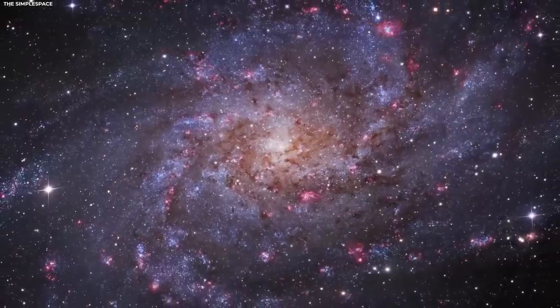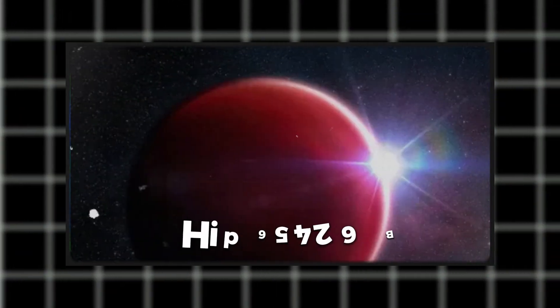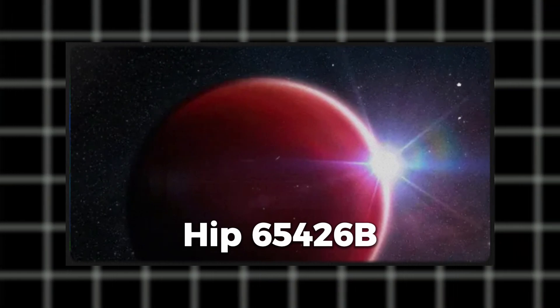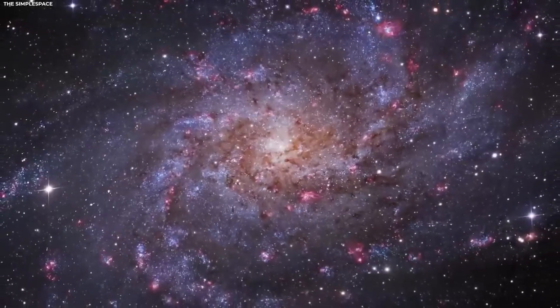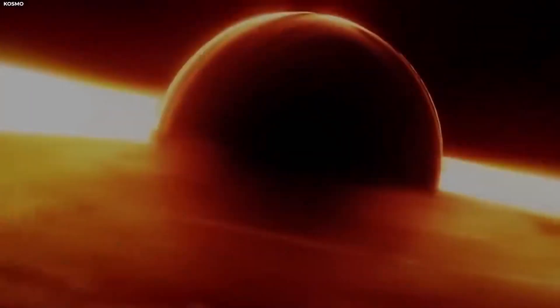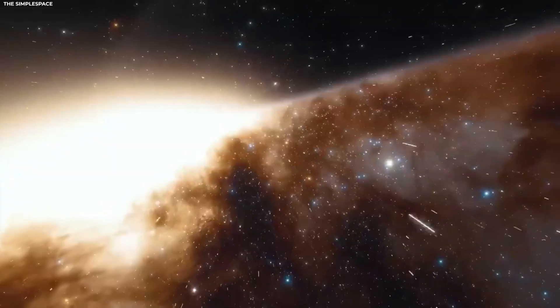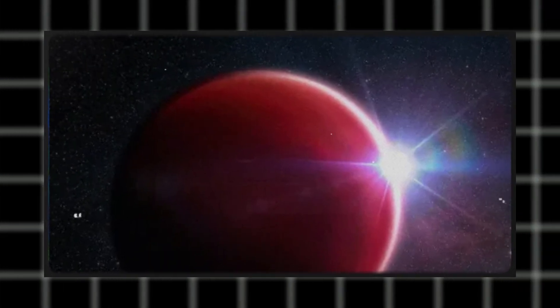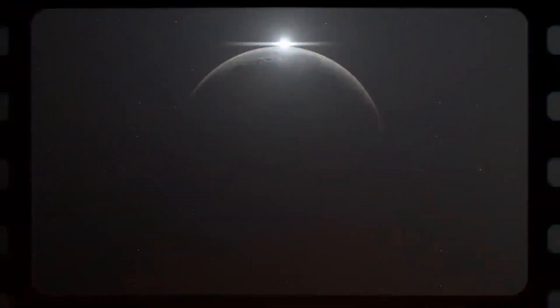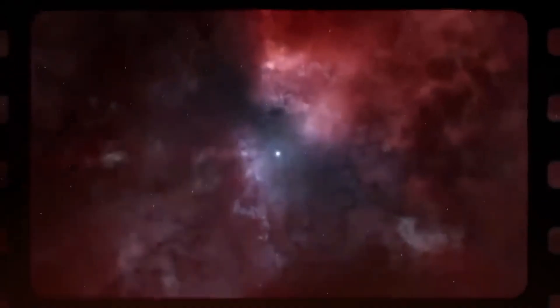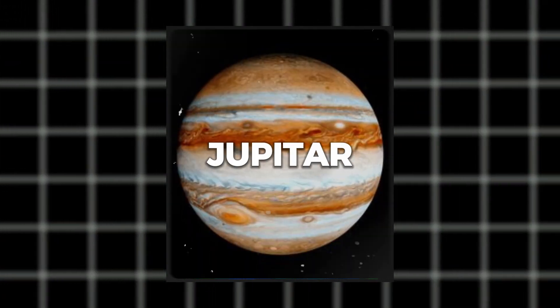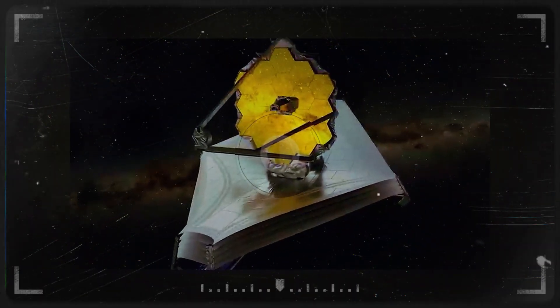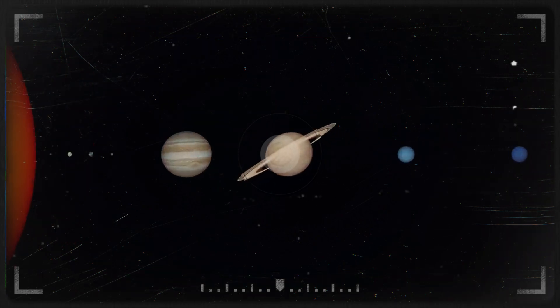This special exoplanet is called HIP 65426 b, a gas giant that's incredibly far from its star, about 100 times farther than Earth is from the Sun. HIP 65426 b is unique because it's huge, about 12 times the size of Jupiter, and it's really far from its star. These discoveries show how powerful and exciting the James Webb Space Telescope is in helping us learn more about the vast wonders of the universe.